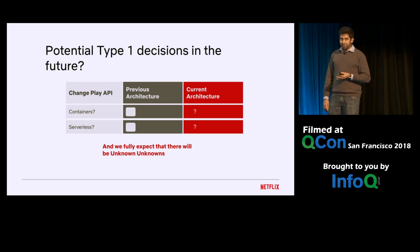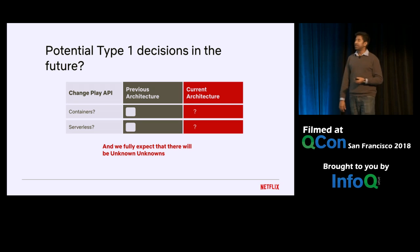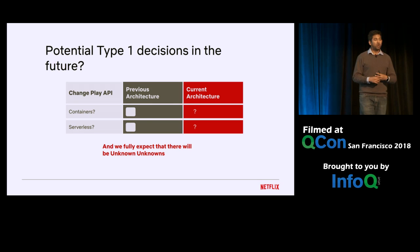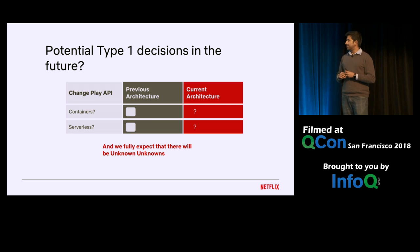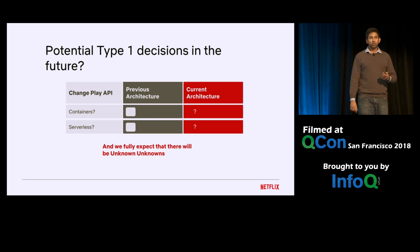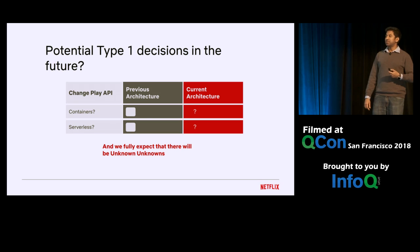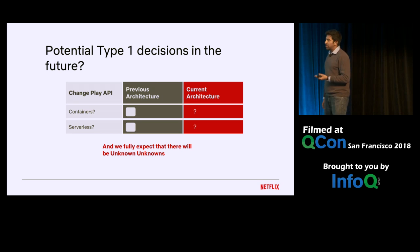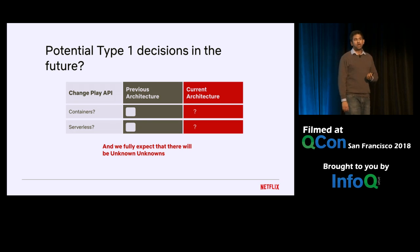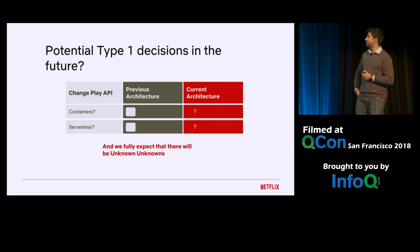There might be potential type one decisions that come in the next three to five years. Within Netflix, some teams are seriously considering and have deployed services in containers, and serverless is something we are just starting to dabble with. Once we become really serious about these two, I'm sure it will tell us how evolvable our services are. These are, in some sense, unknown unknowns — we fully expect that only time will tell how our architecture is able to evolve with those choices.